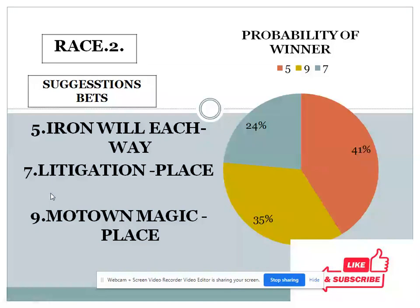Now we can talk about race two. Three choices are given: number four or five with 41 percent, number seven with 35 percent, and number nine with 24 percent. If you see the gap between the top two choices is less than 10 percent, but when we see the gap between the bottom two choices is also more than 10 percent, in this condition our system suggests number seven for place in race two.